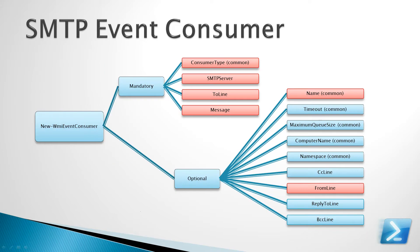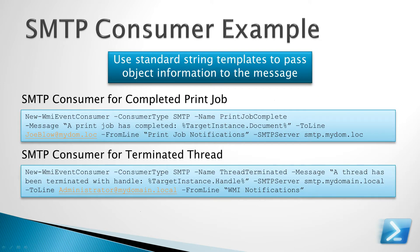Next we have the SMTP event consumer. There are several mandatory parameters such as the SMTP server that we want to use, the To address or email address that we're sending the email to, and the message body. The subject is optional but you can specify it. One thing to note is that we can use standard string templates to pass event details to the consumer, such as in the message body. The examples shown here use the From, To, SMTP server, and message parameters.